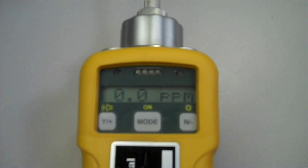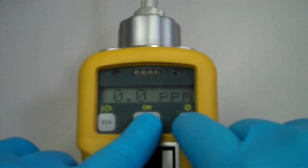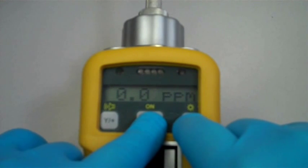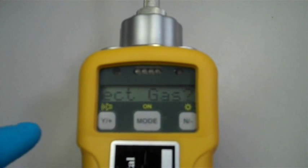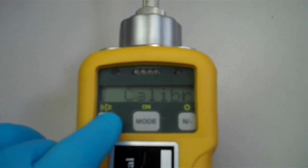To begin calibration, press and hold the Mode and End buttons together until the screen changes. The unit will now display the first setup menu for calibration. Press the Y button to access this menu.